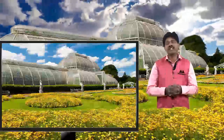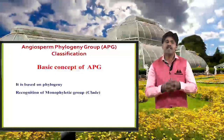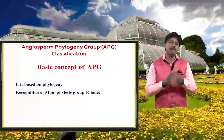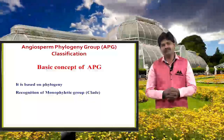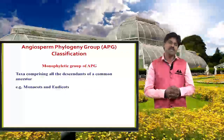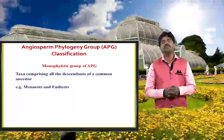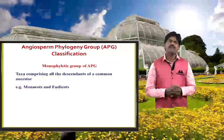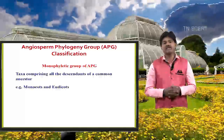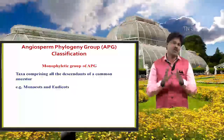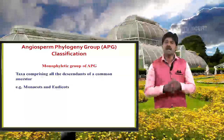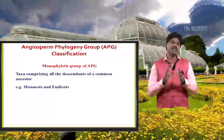So what is phylogenetic? It is based on evolutionary order. Another important basic concept of APG is monophyletic group. Monophyletic means a clade or taxa which includes and comprises all the descendants of a common ancestor. Mono means single — all descendants come from a common ancestor.